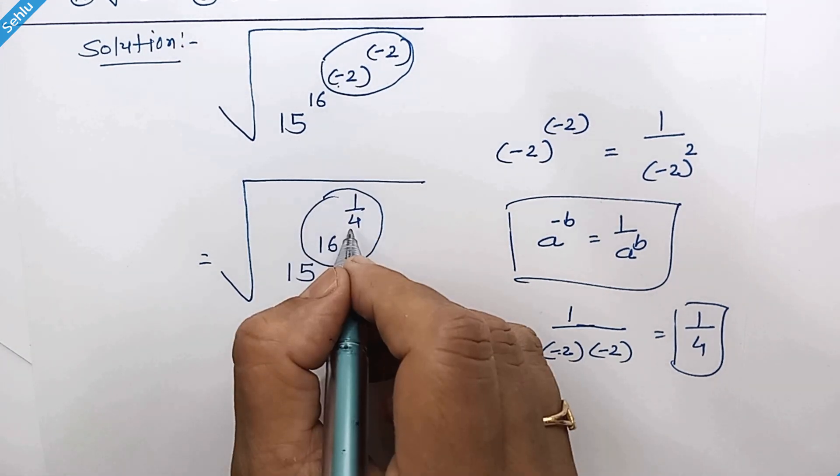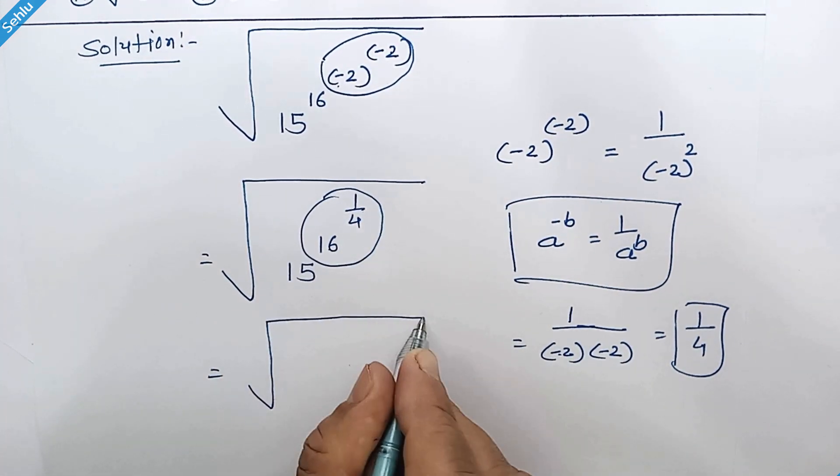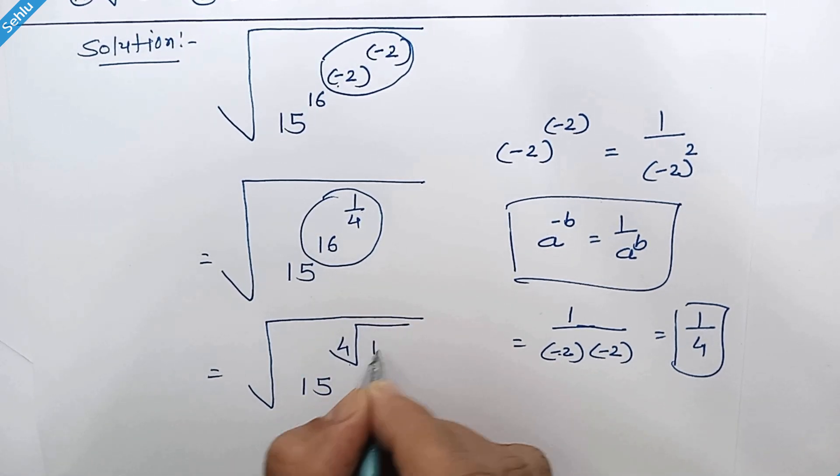16 to the power 1 over 4 is 4th root of 16. So we can write it 15 to the power 4th root of 16.